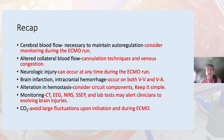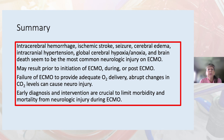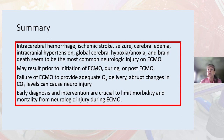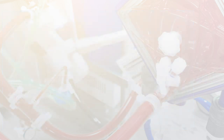Avoid large fluctuations in CO2 upon initiation and during ECMO. In summary, intracerebral hemorrhage, ischemic stroke, seizure, cerebral edema, intracranial hypertension, global cerebral hypoxia and anoxia, and brain death seem to be the most common neurological injuries on ECMO. They may result prior to, during, or post-ECMO. Failure of ECMO to provide adequate oxygen delivery or abrupt changes in CO2 levels can cause neuroinjury. Early diagnosis and intervention are crucial to limit morbidity and mortality from neurologic injury during ECMO.